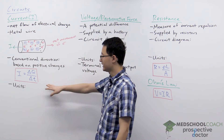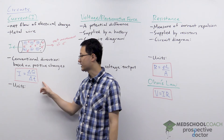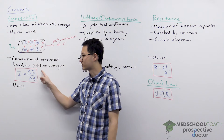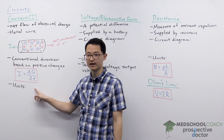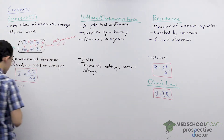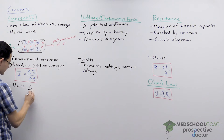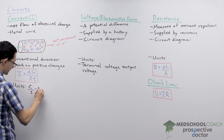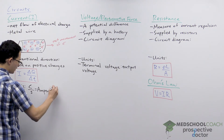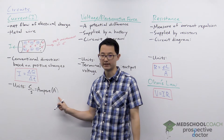Current is also a quantity we can calculate: it is essentially the amount of charge that has flowed per unit time. Using this equation, we can figure out the units for current — charge over time — which is a Coulomb per second. A Coulomb per second is what we call an ampere in SI units, often just called an amp, denoted with capital A.